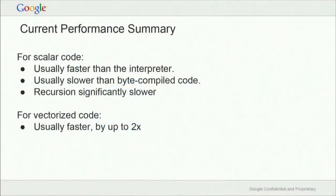So where are we right now? Performance-wise, we've caught back up and overall we're doing a little bit better. On scalar code, we're typically a bit faster than the interpreter but not as good as the byte compiler yet. For recursive functions, we're quite a bit slower — we need to work out what's going on there. For vectorized code, we're currently twice as fast. Obviously we want to get to 10 to 20 times faster, but we're not there yet.